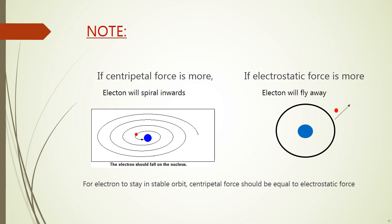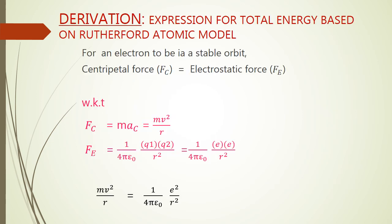Before we start with the derivation, let us understand a key concept. When an electron revolves around the nucleus, there are two forces acting: centripetal force directed towards the center, and electrostatic force in the opposite direction. If the centripetal force is more, the electron will fall into the nucleus. Therefore, centripetal force must equal electrostatic force for an electron to stay in a stable orbit. We will now derive an expression for the total energy of an electron moving around the nucleus using Rutherford's model.